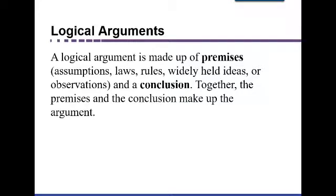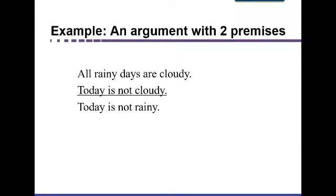So what is a logical argument? A logical argument is made up of premises, which are just statements — assumptions that we're making — and then there'll be a conclusion, which is a fact that we believe our premises support. Together the premises and the conclusion create an argument. As an example of an argument with two premises: 'All rainy days are cloudy. Today is not cloudy. Therefore, today is not rainy.'